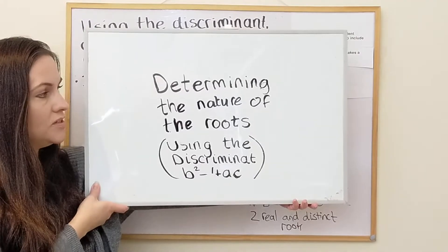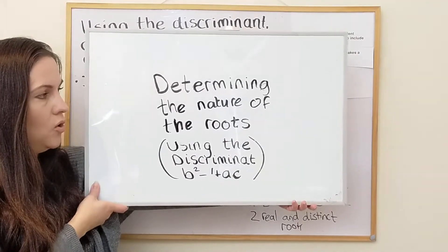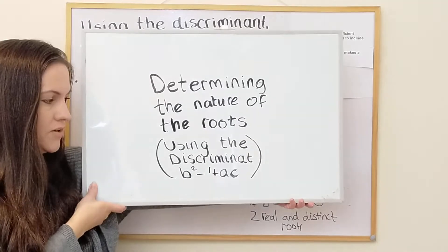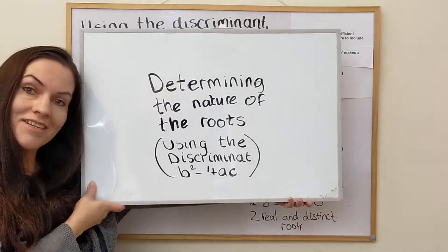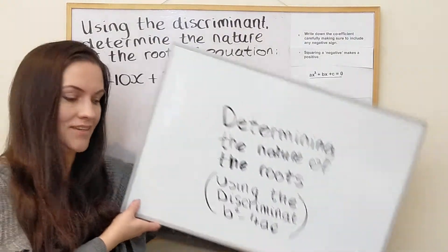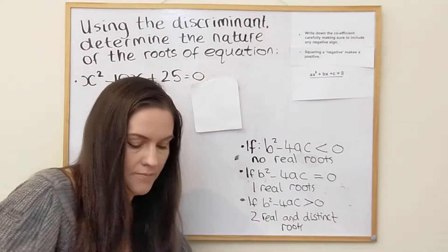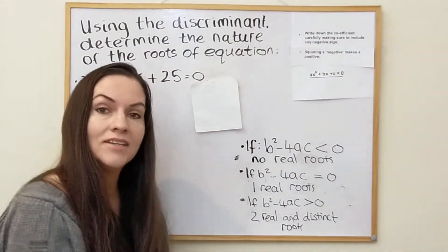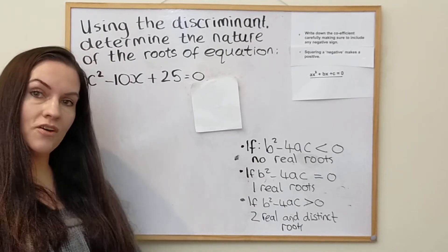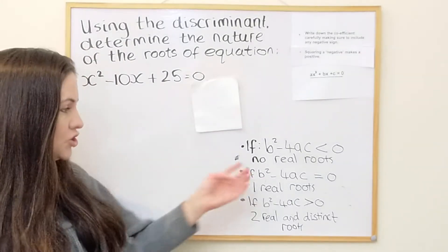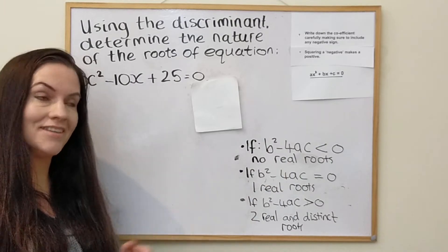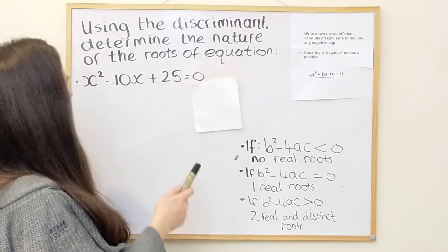Hi and welcome to this week's video on determining the nature of the roots, as per viewer request. We're going to use the discriminant to do so — b squared minus 4ac — and you might remember part of that from the last video where we were looking at working out the roots of an equation. This time we're just using that part of it, so it's actually kind of easier.